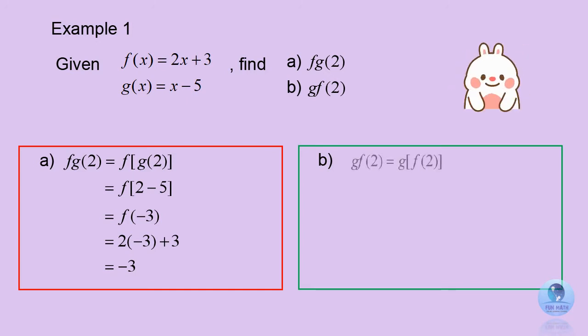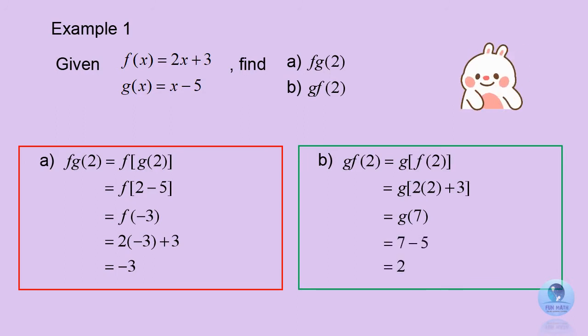Question B: find g of f of 2. First, you must solve f of 2. Substitute 2 into f of x and you get 2 times 2 plus 3, which gives you 7. Then substitute 7 into g of x and you get the answer 2.